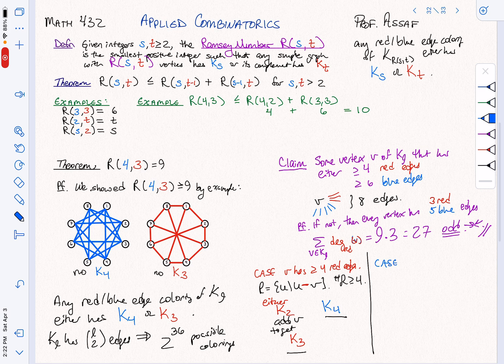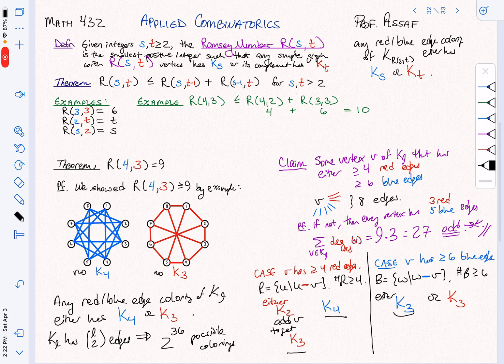We'll do the other case. The other case is completely analogous. V has greater than or equal to six blue edges. So again, we're going to let B equal the set of W such that W and V are connected by a blue edge. And how many things do we have in B? Well, at least six. So again, let's look here. What do we have? We have six. Great. So that means that we either get one of the following two cases. We either get a K3 red or a K3 blue. In this case, we're going to add V to get K4. And in this case, we already have K3.